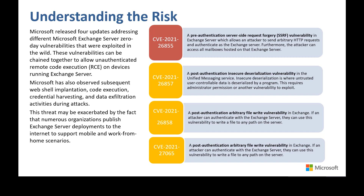CVE-2021-26855 is a pre-authentication server-side request forgery vulnerability, which allows an attacker to send arbitrary HTTP requests. The attacker does not require credentials into the system to exercise this vulnerability, and the vulnerability can enable accessing of email and remote code execution. The SSRF vulnerability can be combined with the other three vulnerabilities to enable arbitrary file writes.